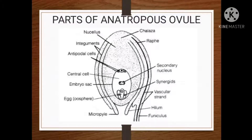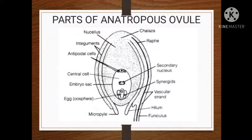The nucellus is the central major part of the body of the ovule. It is made up of diploid parenchymatous cells. It is nutritive tissue as its cells contain food substances, hence it is called nucellus. It is also called megasporangium because it produces megaspores from which the female gametophyte or embryo sac develops. The megaspore mother cell produces four megaspores; from these, one remains functional and the others degenerate.